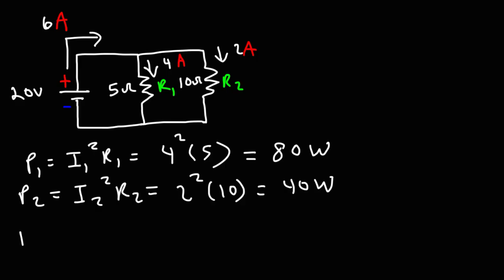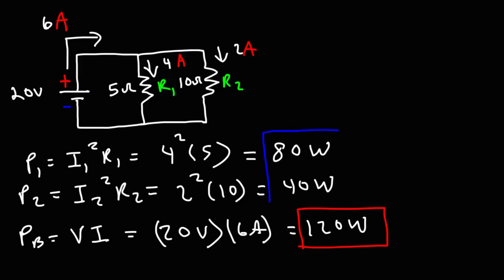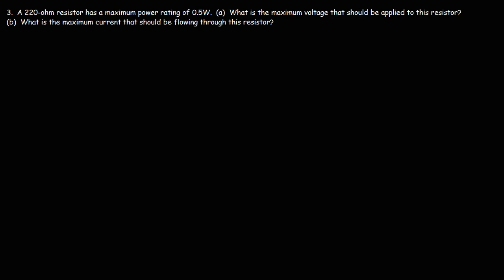The power delivered by the battery is going to be the voltage times the current. The voltage of the battery is 20 volts and the current flowing from it is 6 amps, so 20 times 6 is 120 watts. Once again, the power delivered by the battery equals the sum of the power dissipated by the resistors.